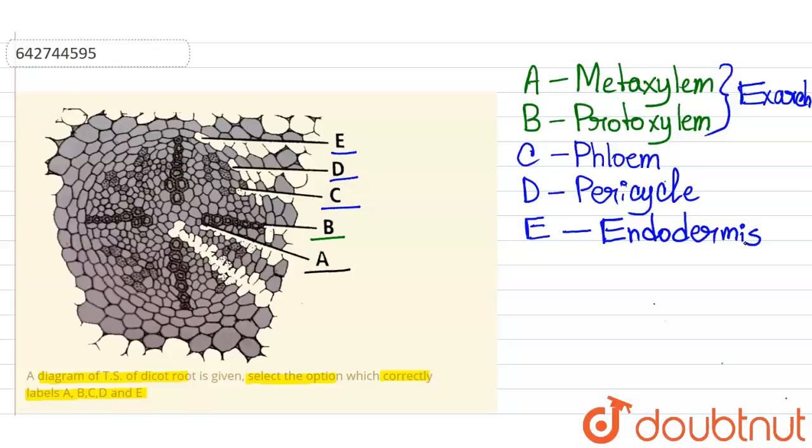And the phloem is situated at the outer side of the bundle. And endodermis is the innermost covering of the cortex and it consists of a singular row of cells that are densely arranged.